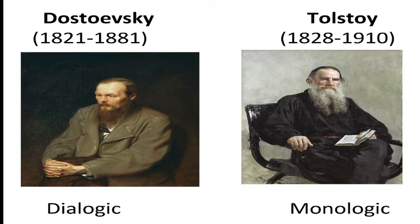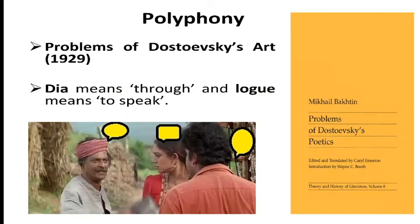Both are fantastic authors. But Bakhtin feels that Dostoevsky's novels are dialogic and that of Tolstoy's are monologic. In 1929, Bakhtin's first major work, Problems of Dostoevsky's Art, was published. It is here that Bakhtin introduces the concept of Dialogism.